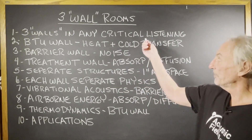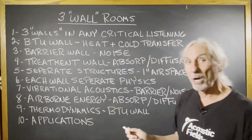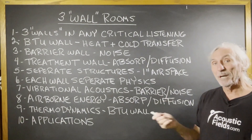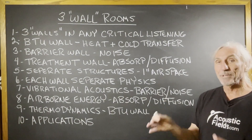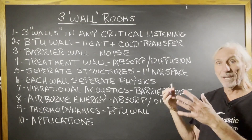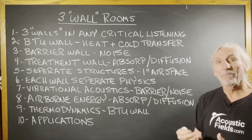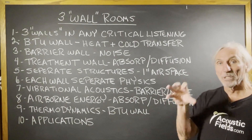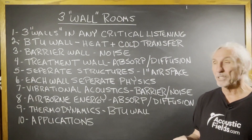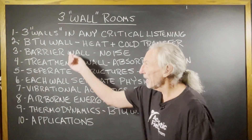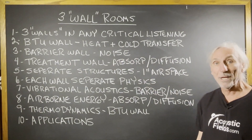We have three walls in any critical listening environment. We have the BTU wall, which is actually governed by city, county, and state codes. You have to have so much insulation — it has to have so much R-value. It has to meet all these restrictions to comply with the weather for that particular region of the country. So we call that our BTU wall — it deals with heat and cold transfer.